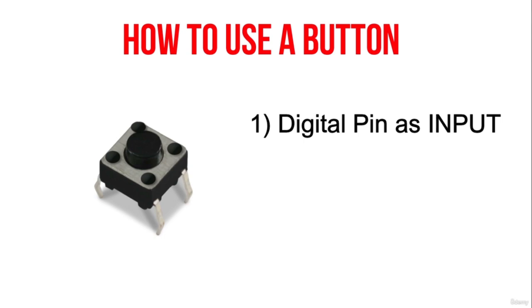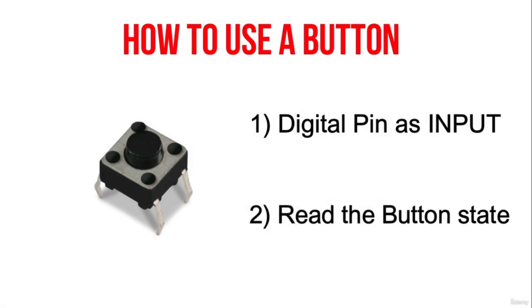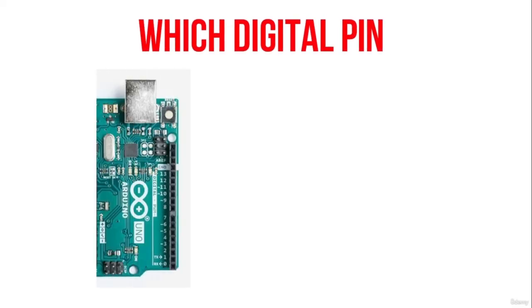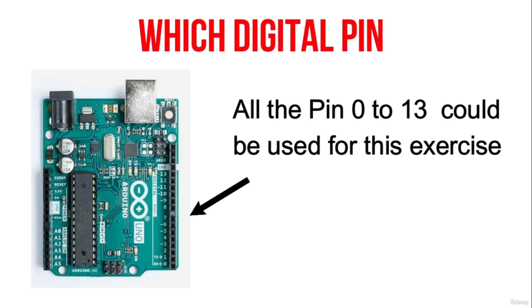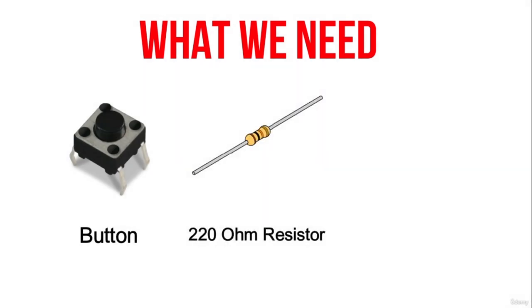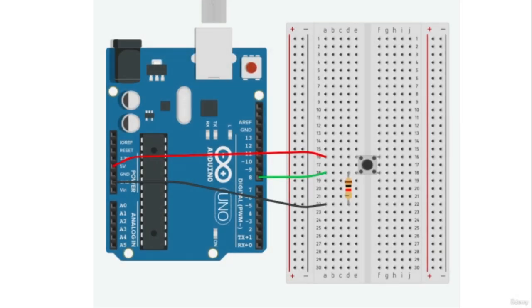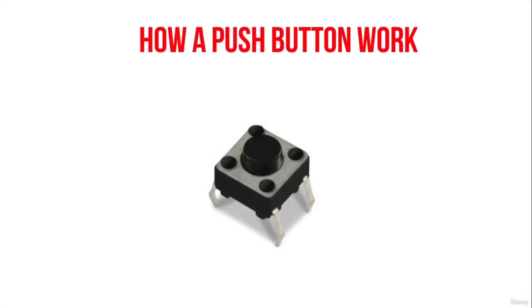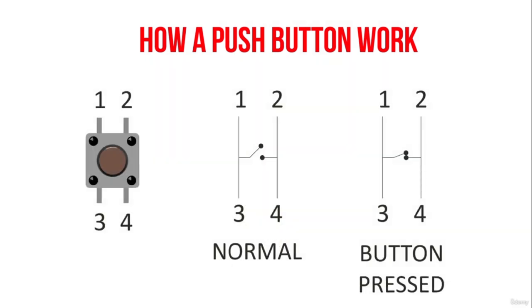To use a button with the Arduino, we need to connect it to a digital pin configured as input and read its state using the digitalRead function. We can use any digital pin from 0 to 13, and in this exercise we will use pin number 8. For this project, we need a press button, a 220 ohm resistor, and some jumper wires. The button presents 4 pins used in pairs. When the button is not pressed, it works as an open switch, meaning current cannot flow between its terminals. When pressed, the switch closes, letting current pass.